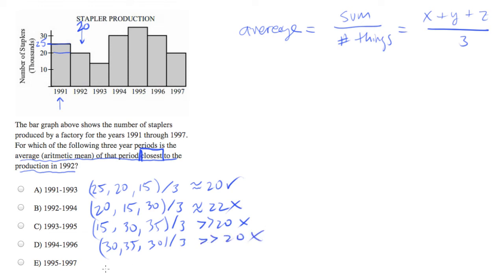And 95 to 97 will be 35, 30, and it looks like 20. Which again will be much greater than 20, so we're going to eliminate it.